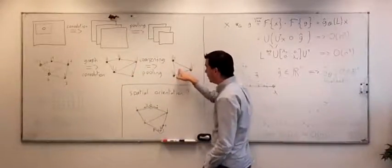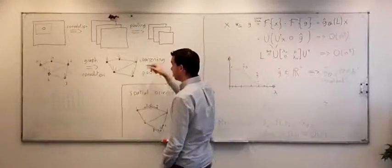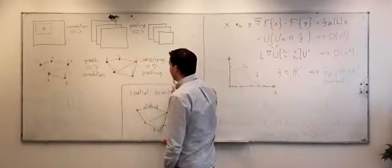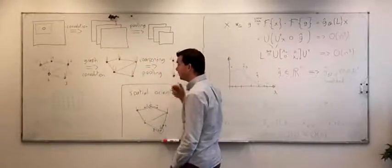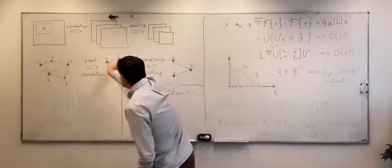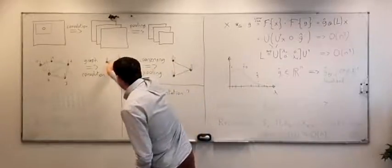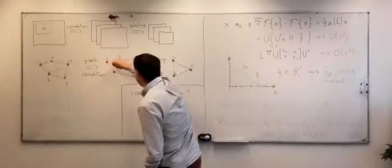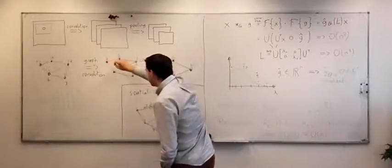In contrast to images, where downsampling is easy, on graphs we first have to decide which vertices need to be matched or selected.